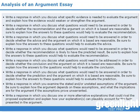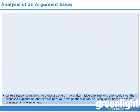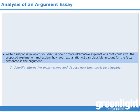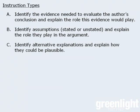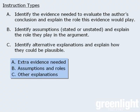This last set of instructions essentially directs us to identify other possible explanations and discuss how they could be plausible. So really, each of the eight possible sets of instructions can be categorized as one of three types, which we'll refer to as type A, type B, and type C. Of the 174 publicly available essay prompts, type A instructions account for 65% of all instructions, type B accounts for 30%, and type C accounts for 5%.